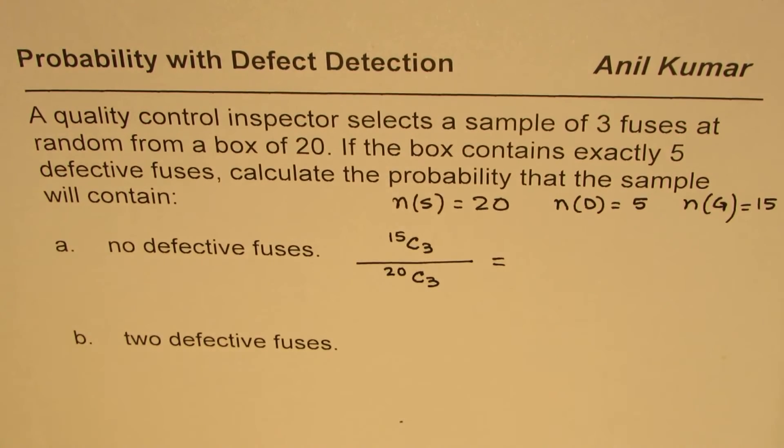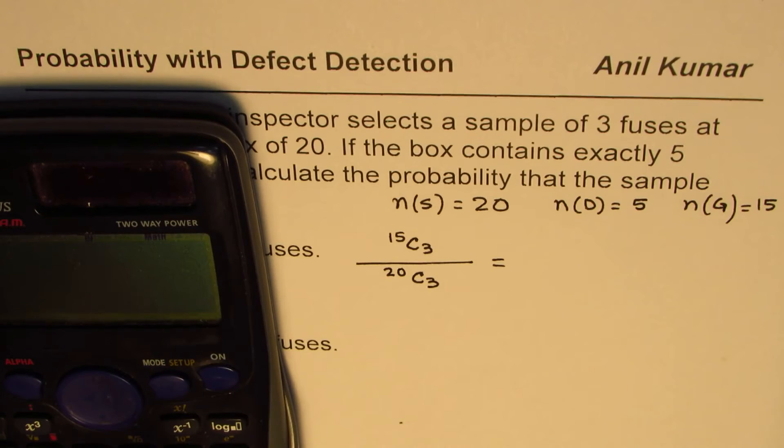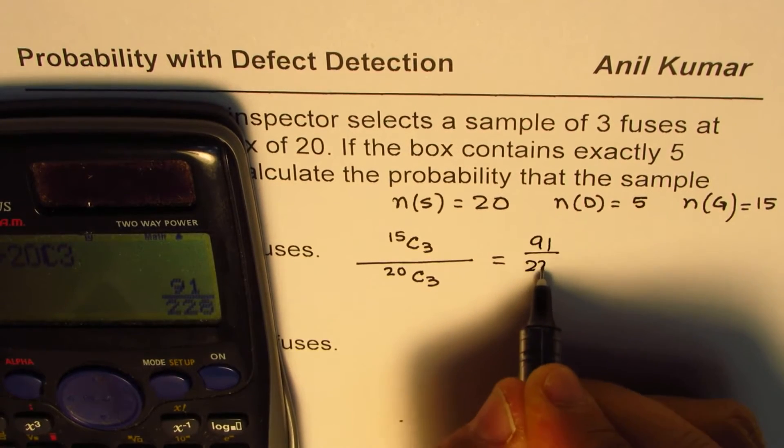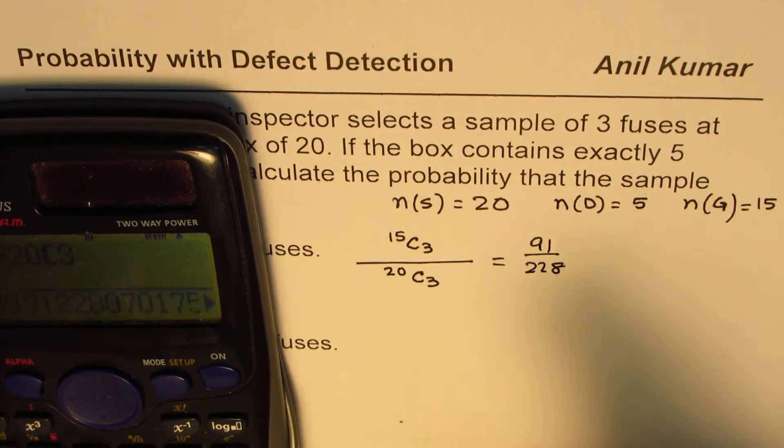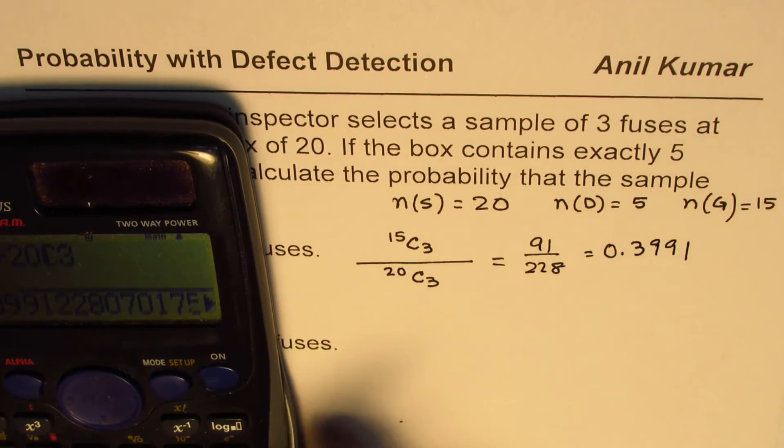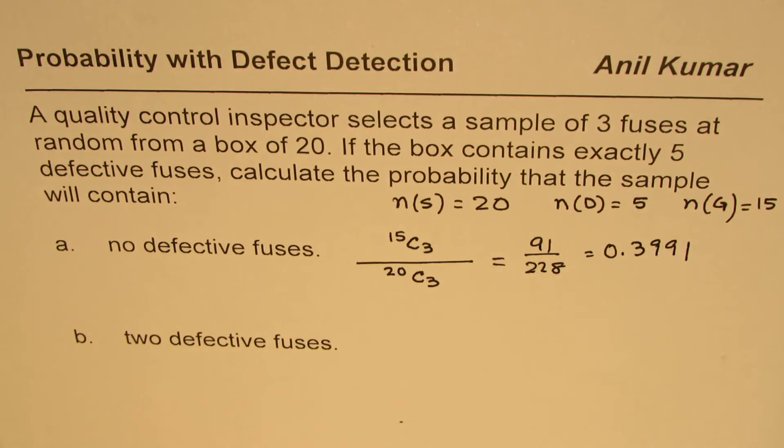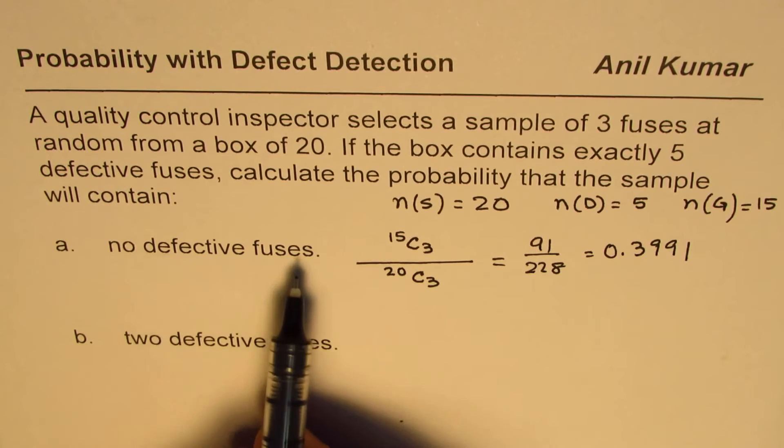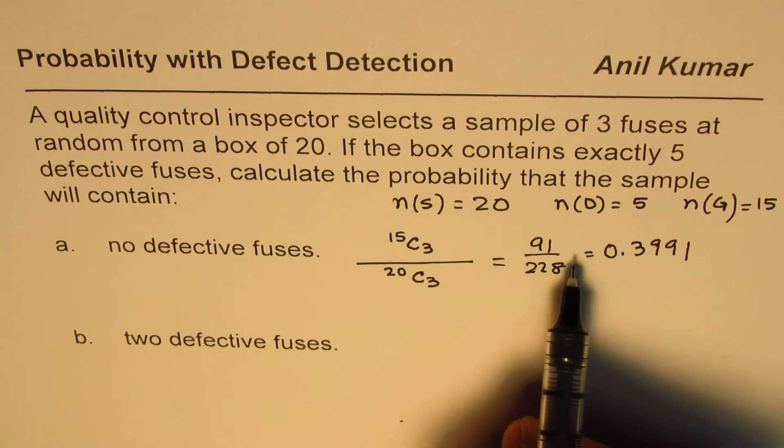So we can use the calculator and find the answer. So it is 15 shift combination 3 divided by 20 combination 3 equals 91 over 228, or in decimals we could write this answer as equal to 0.3991. So like this, we could calculate probability that the sample contains no defective piece.